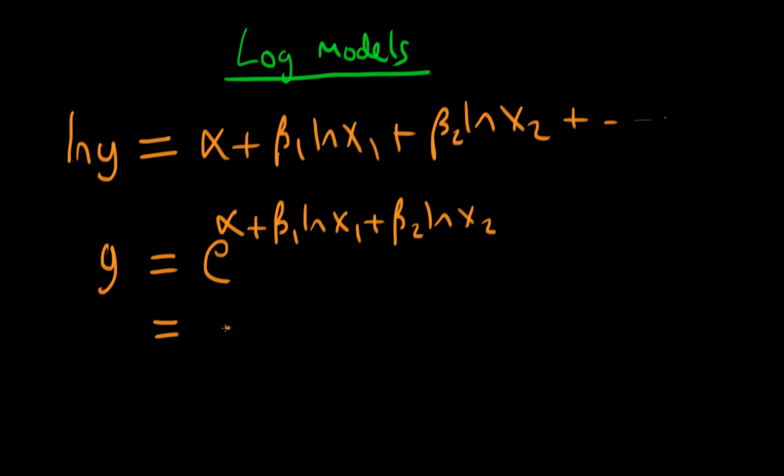Well, I know that when the powers add, that is the same as multiplying the numbers if I've got the same base. So I can write this out as e to the alpha times e to the beta 1 log x1 times e to the beta 2 times log x2.